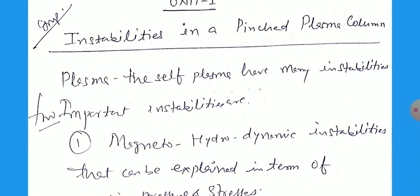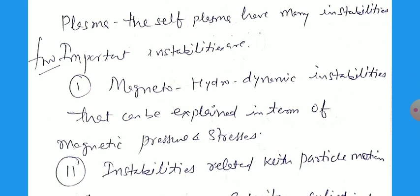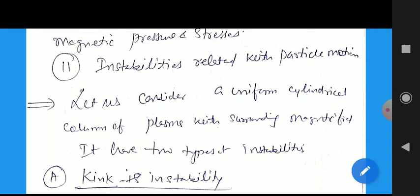There are two important instabilities. Number one, magnetohydrodynamic instabilities that can be explained in terms of magnetic pressure and stresses, just like hydrodynamics. And the second one, instabilities related with particle motions, produced due to the motion of the particles.